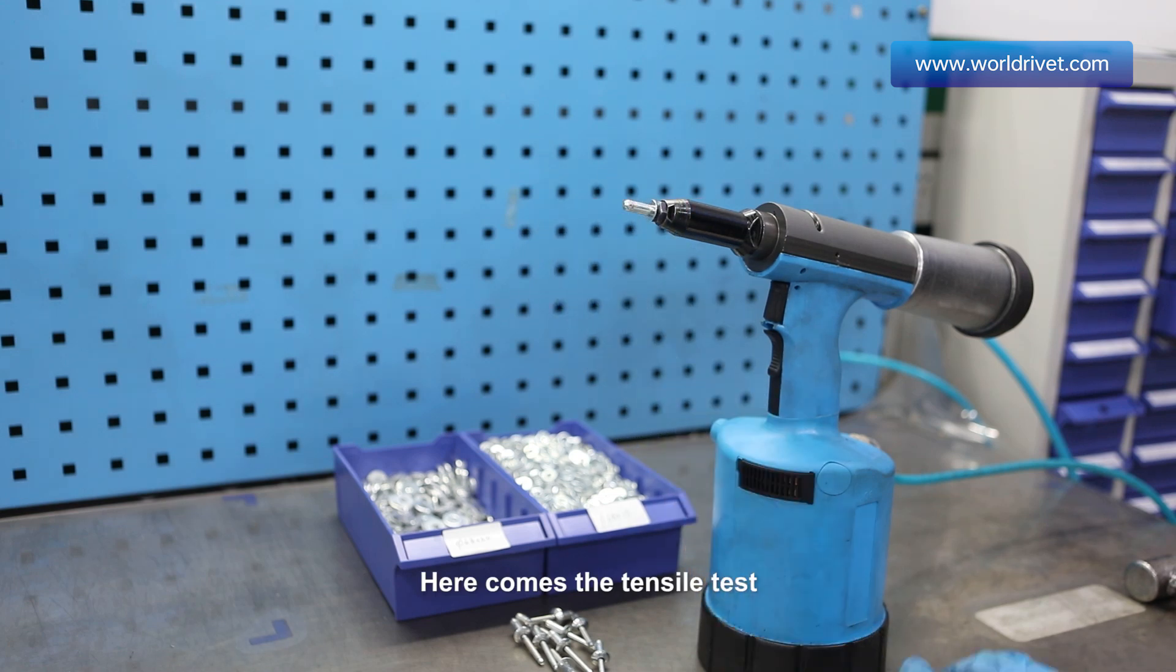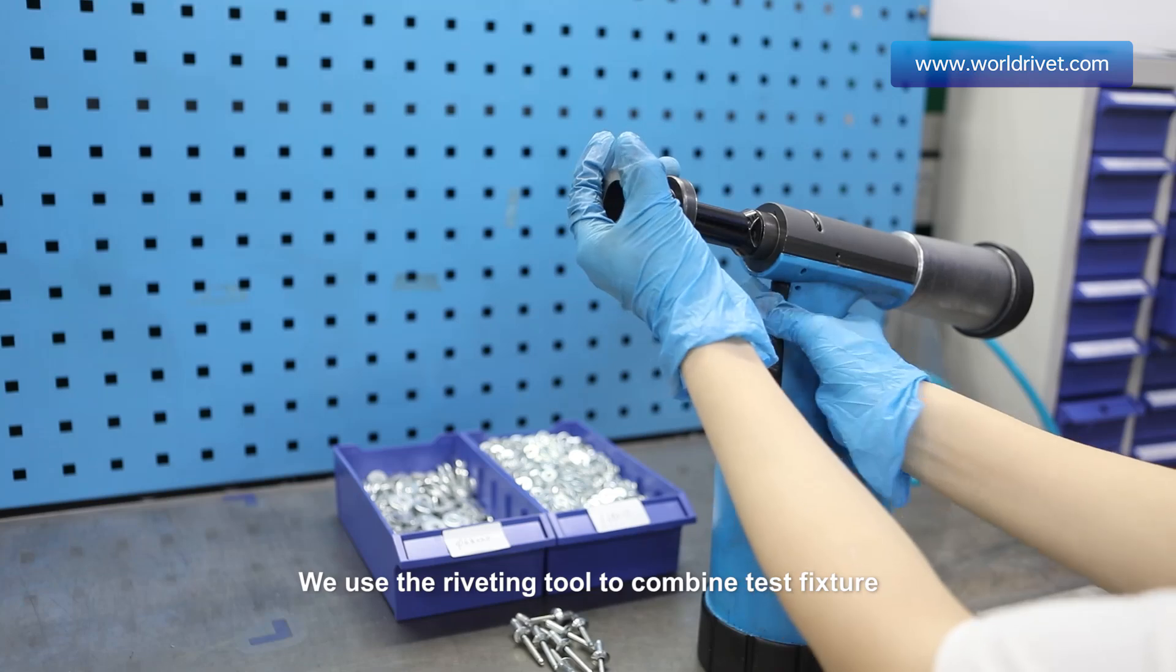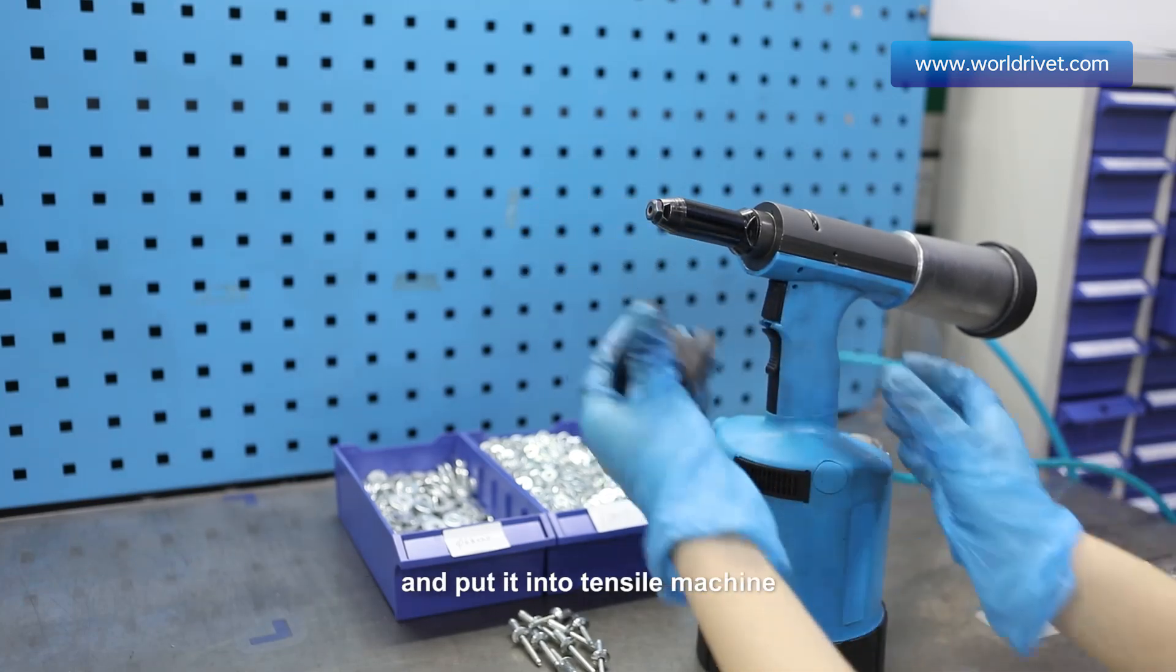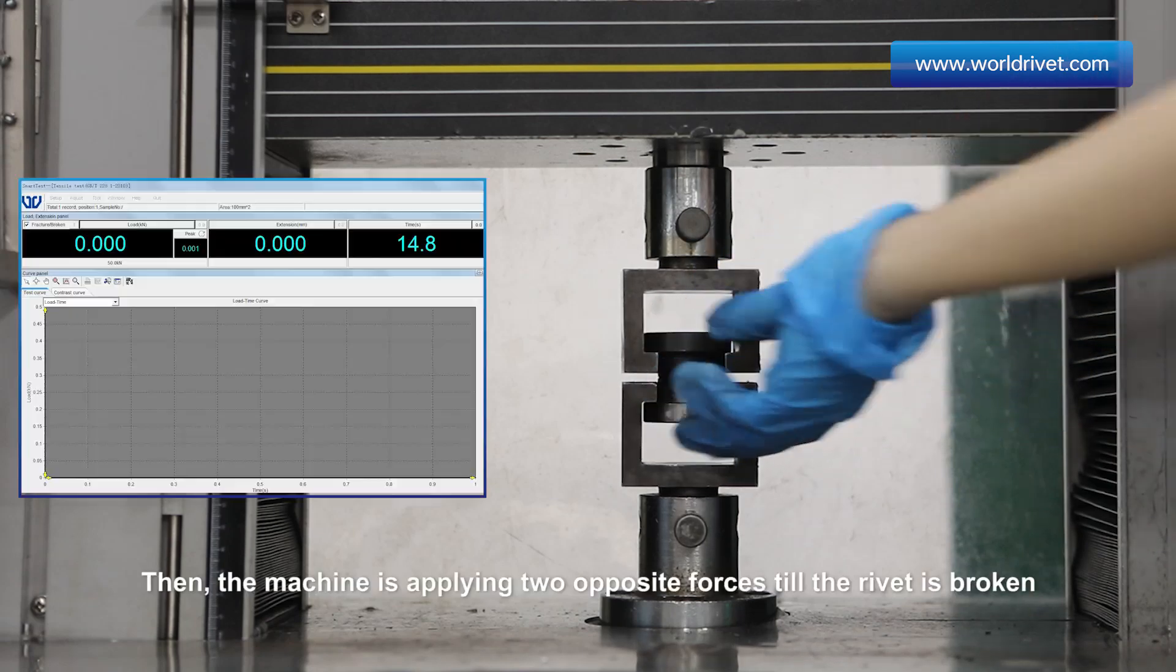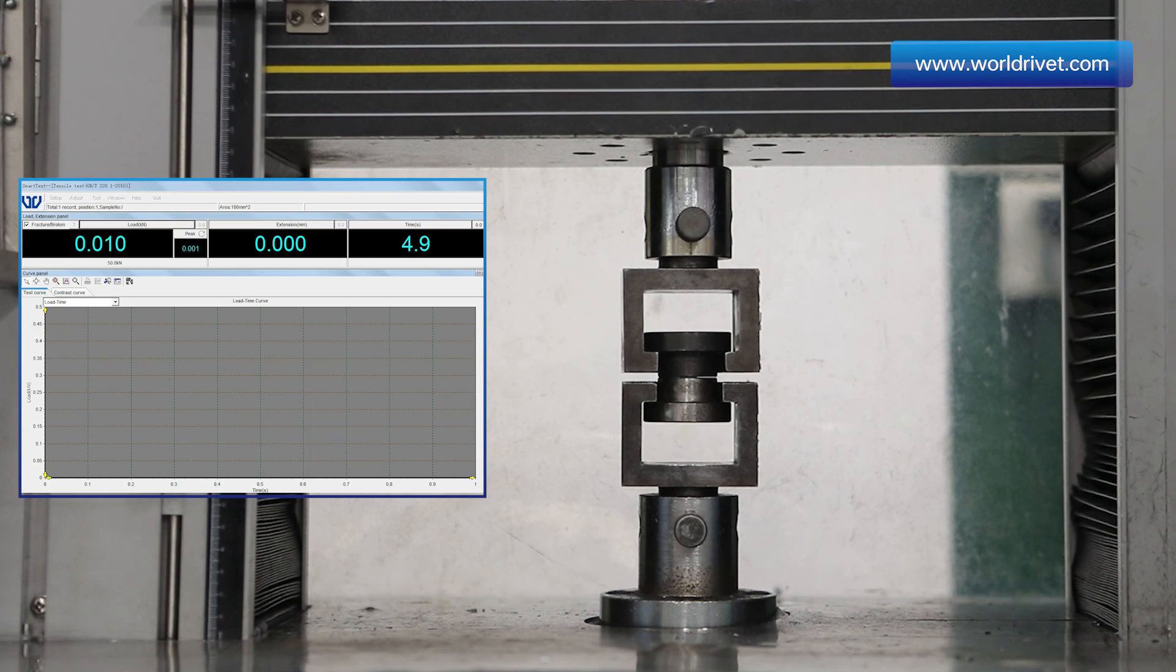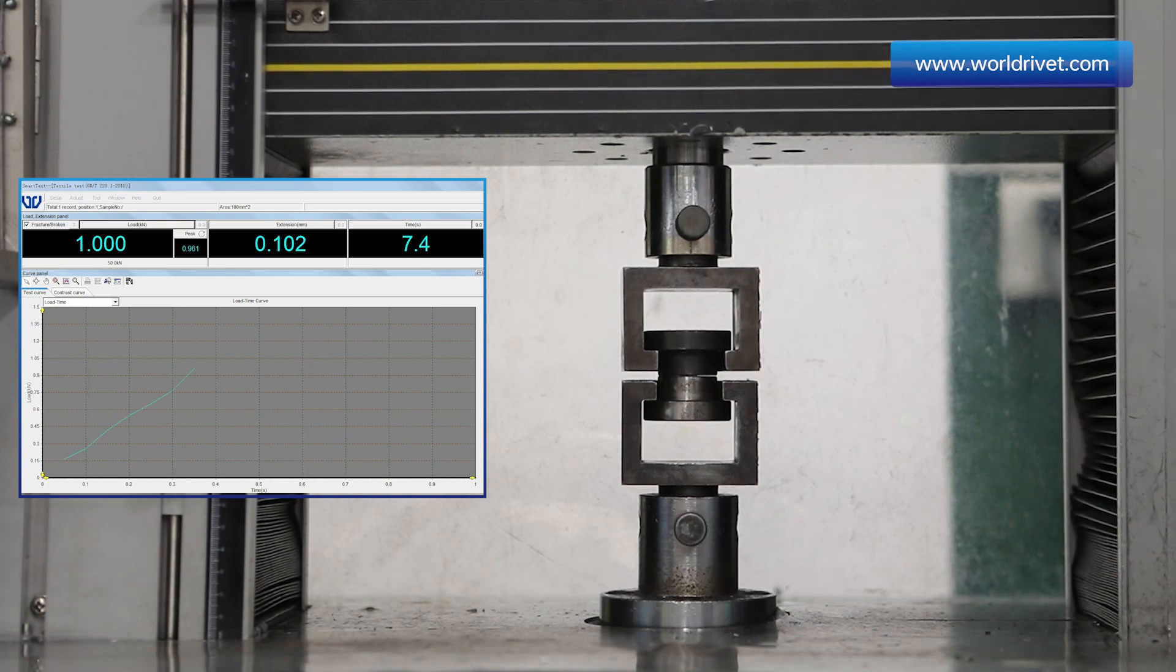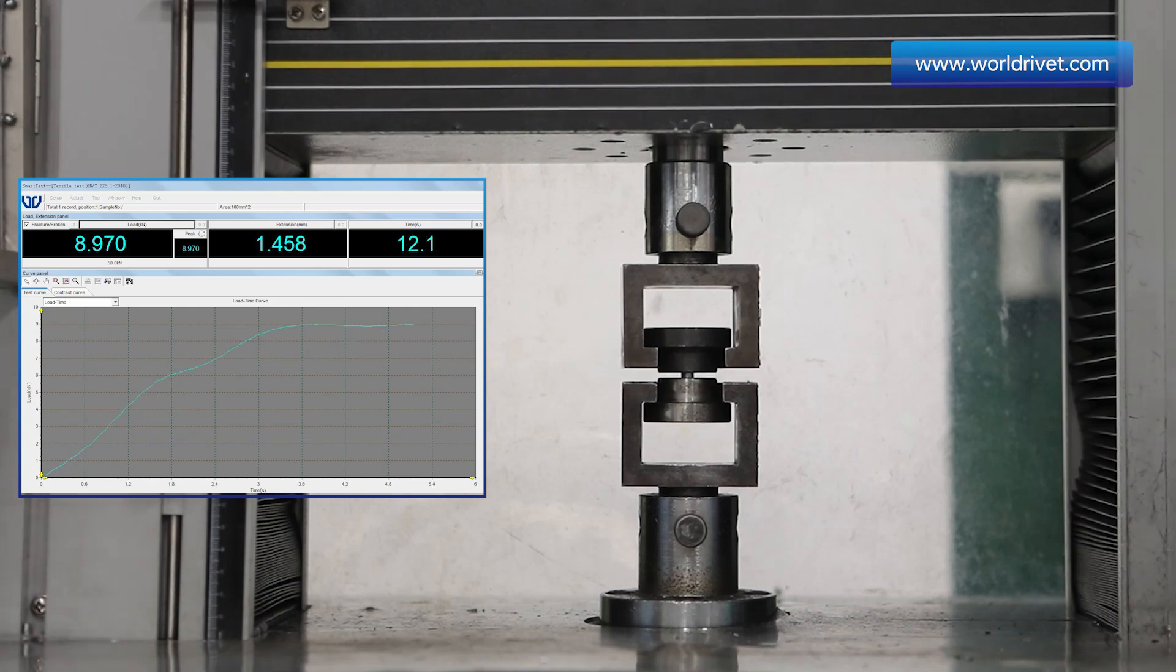Here comes the tensile test. We use the riveting tool to combine test fixture and put it into tensile machine. Then, the machine is applying two opposite forces till the rivet is broken. The result is 91.70 N.